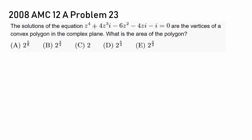The solutions of the equation z to the fourth plus 4z cubed i minus 6z squared minus 4zi minus i equals 0 are the vertices of a convex polygon in the complex plane. What is the area of the polygon?